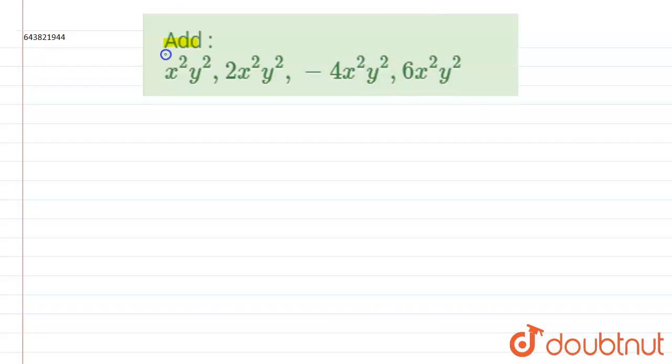So here there are 4 algebraic expressions given. We need to add the given expressions. So let us write down x square y square plus 2x square y square plus minus 4x square y square plus 6x square y square.